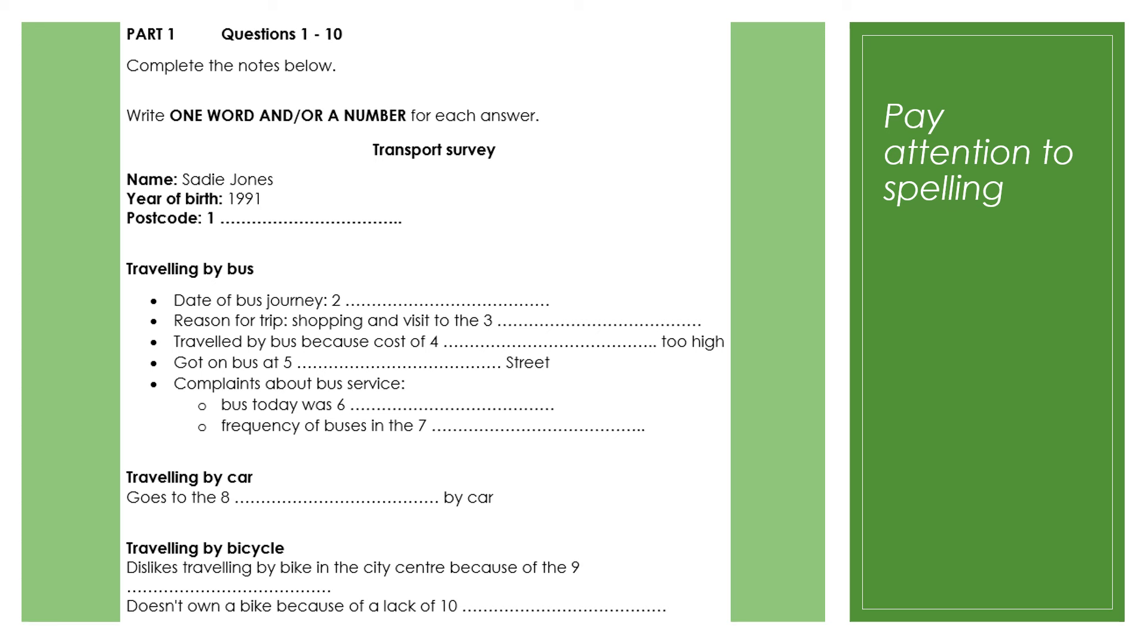So why haven't you got one now? Well, I live in a flat on the second floor and it doesn't have any storage, so we'd have to leave it in the hall outside the flat. I see. Okay, well I think that's all we need from you today, Sadie. That is the end of Part 1.